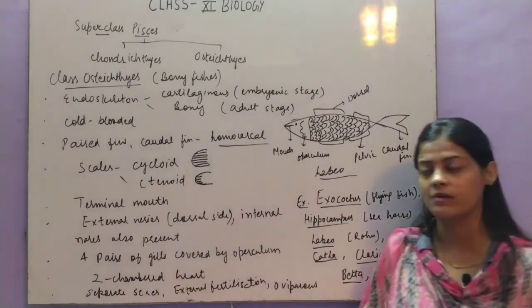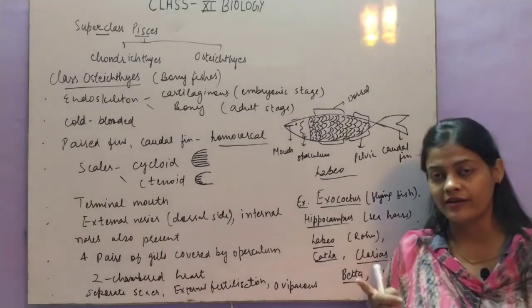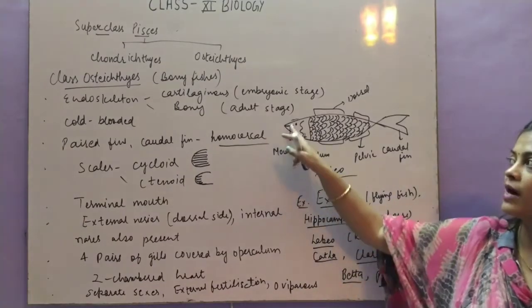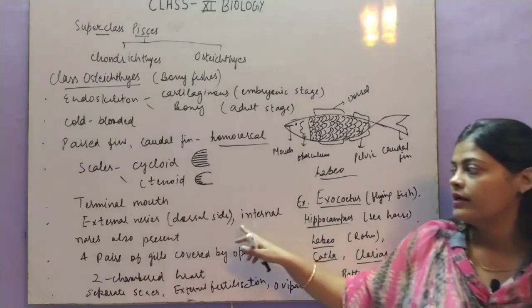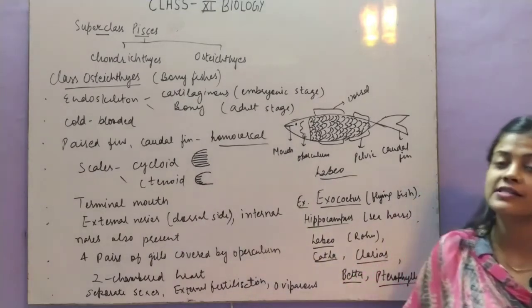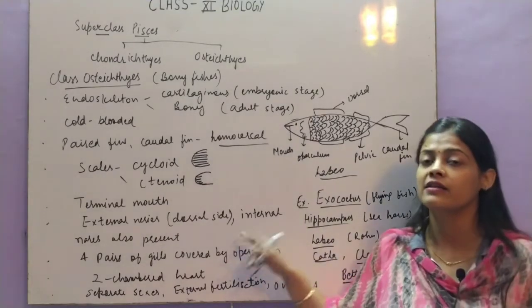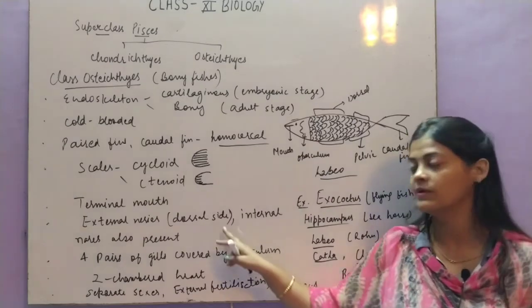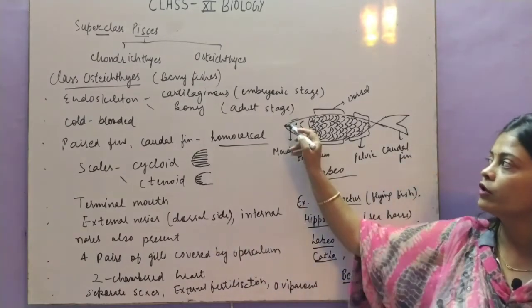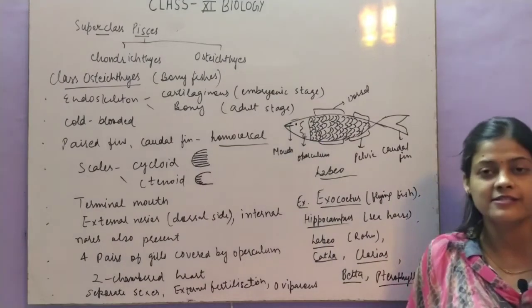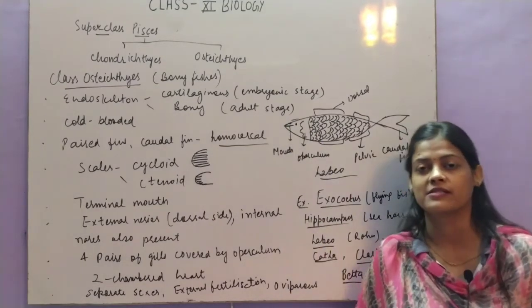The mouth is terminal — right at the tip of the head — unlike the ventral mouth in Chondrichthyes. External nostrils are present at the dorsal side, not the ventral side. Internal nostrils are also present, which were absent in Chondrichthyes.